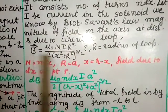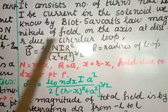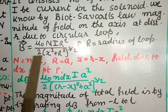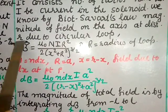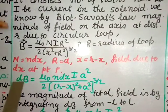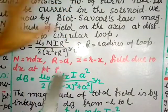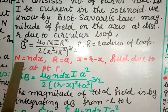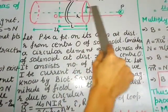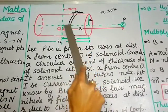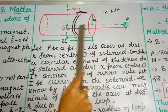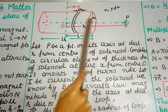We found the magnetic field at distance x on the axis for a single turn. Now I am going to apply this formula for our solenoid element. The number of turns in dx is n·dx, the radius will be a, and the distance of point P from the center of the element needs to be determined.